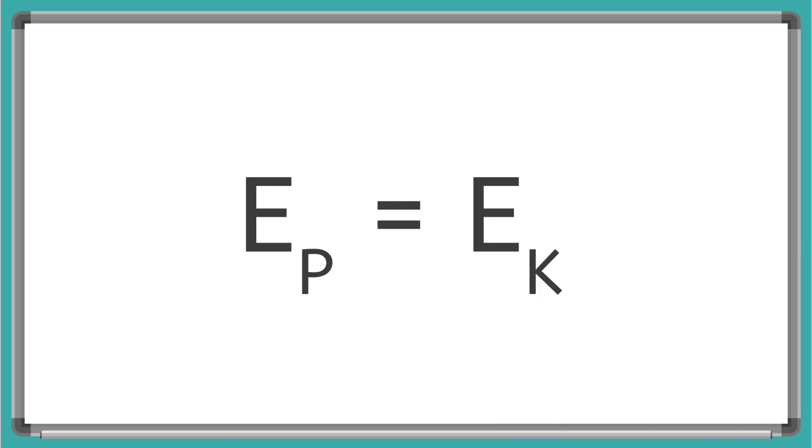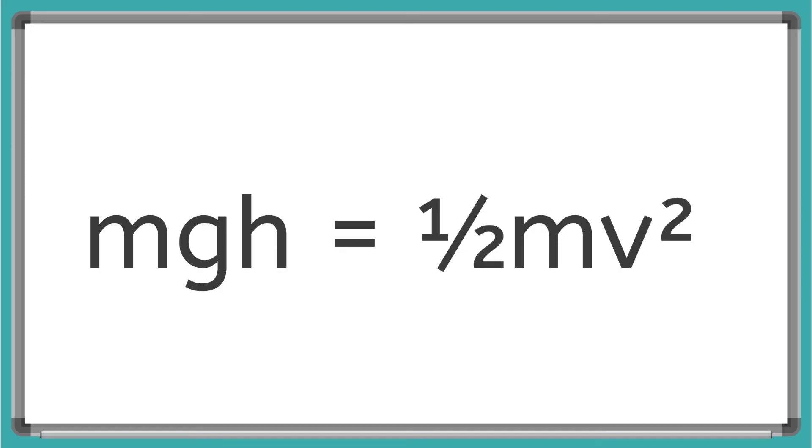So we can also write this as mgh equals one-half mv squared. And this equation can tell us all kinds of things. So check out the next video about the equations for friction and thermal energy, and then we'll do some math. And remember to always be clever.